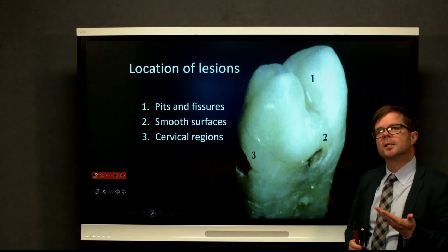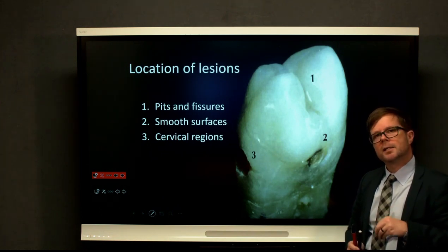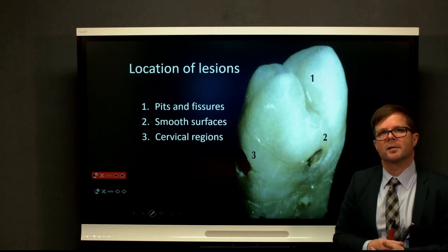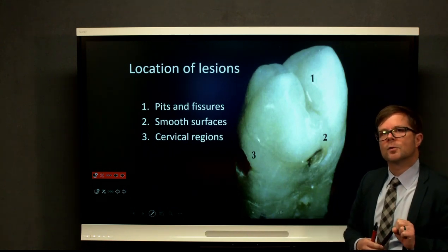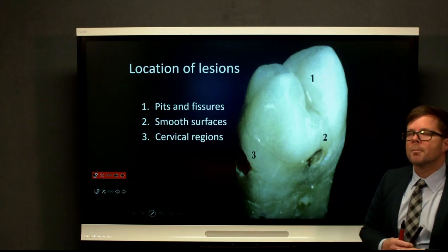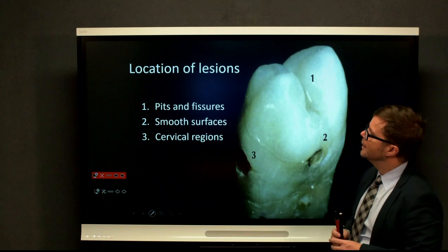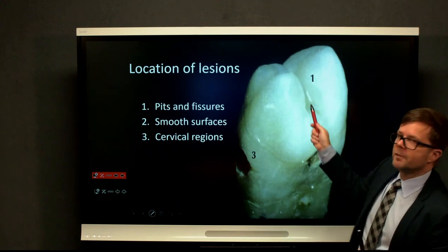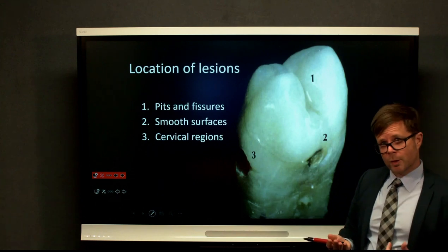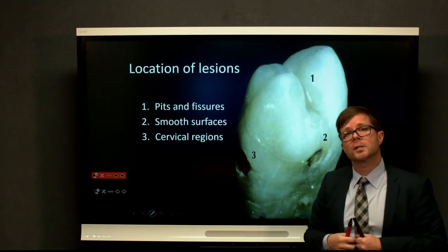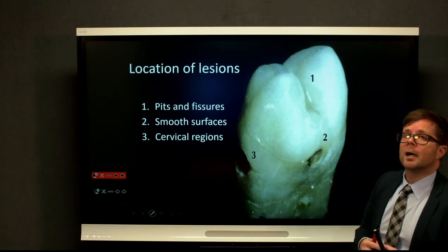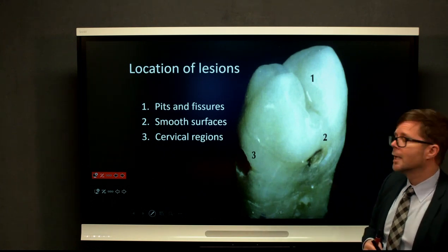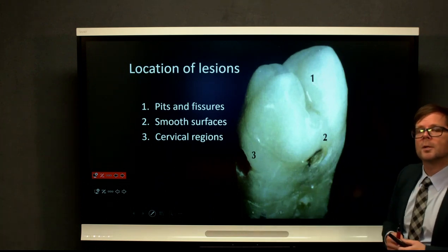Let's look at where these lesions will be and consider how the principles of cavity design may be applied differently according to the surfaces of the teeth affected. Dental caries can affect any part of the tooth where plaque is left to accumulate, but most commonly in human teeth we see three areas where we get cavitation: the pits and fissures of the teeth — commonly on the occlusal surface but also on the palatal surfaces of molars, the palatal groove behind front teeth, the palatal surfaces of incisors, and the buccal surface of lower molars which are commonly pitted.